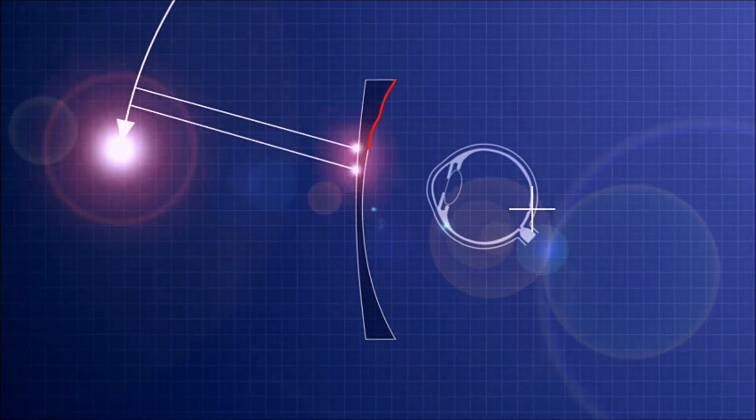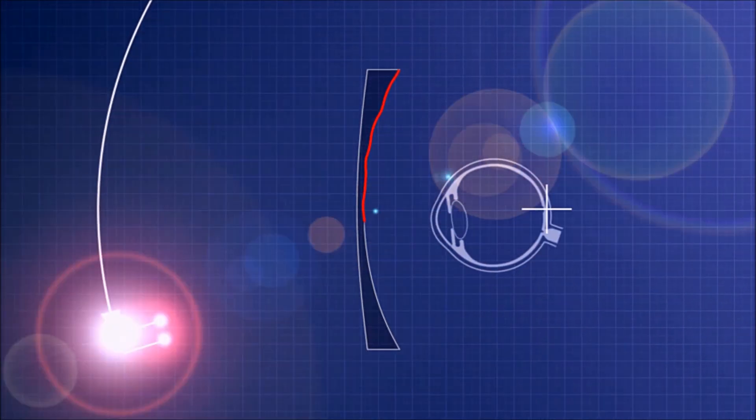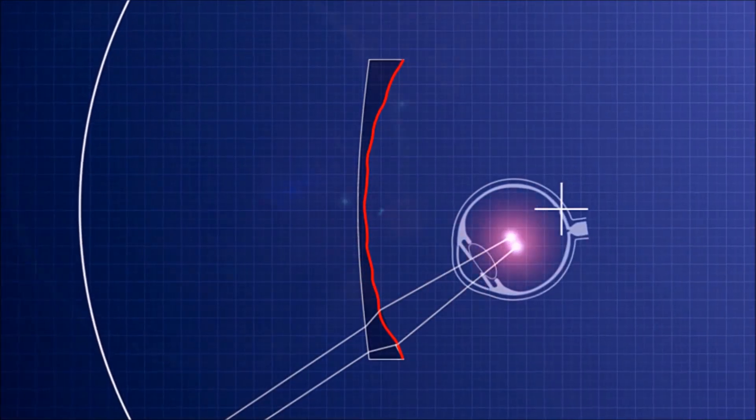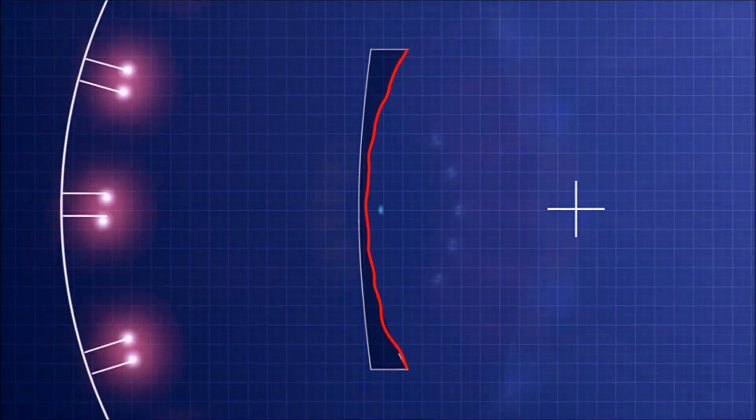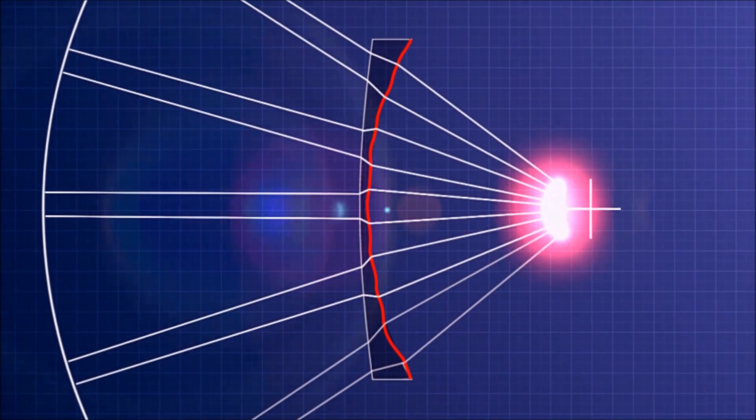This procedure is repeated for every direction of sight until the entire back surface of the lens is adjusted and all simulated beams focus in the fovea.